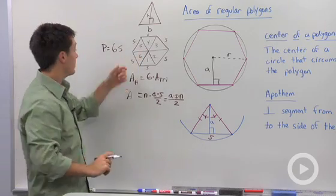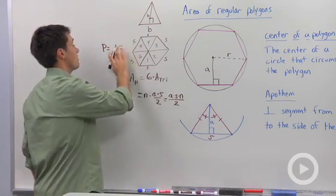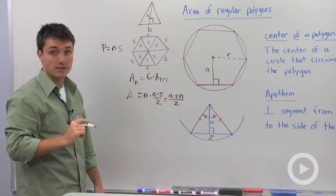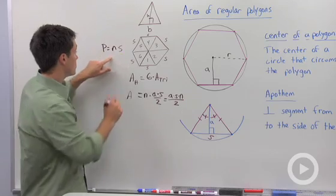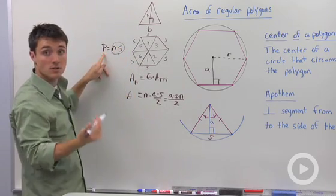If I had a pentagon, that would be five S. So what I'm going to do is I'm going to say that the perimeter of any regular polygon is N times S. So I can substitute N times S for capital P, which is going to stand for perimeter.